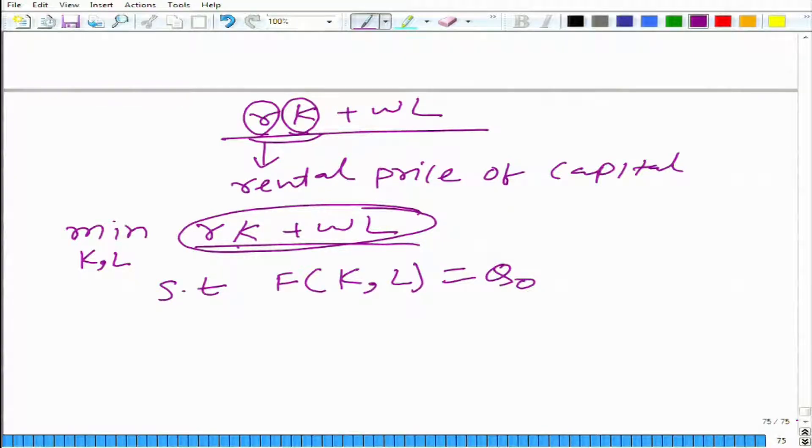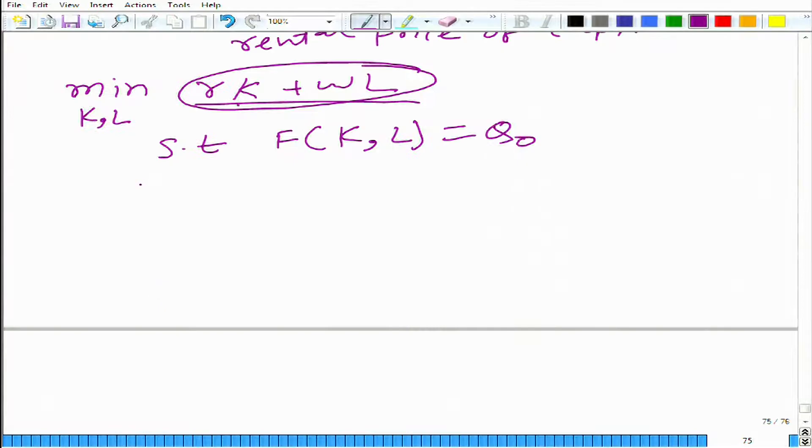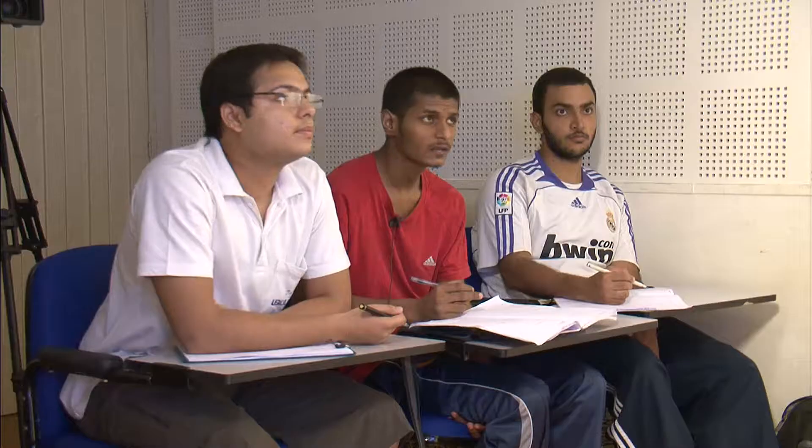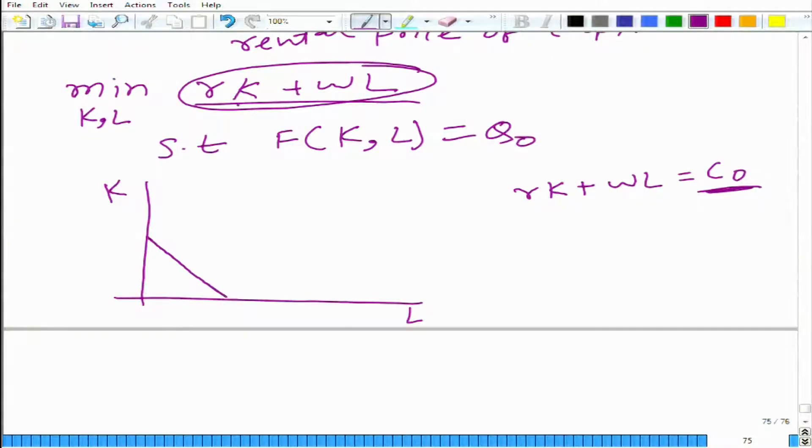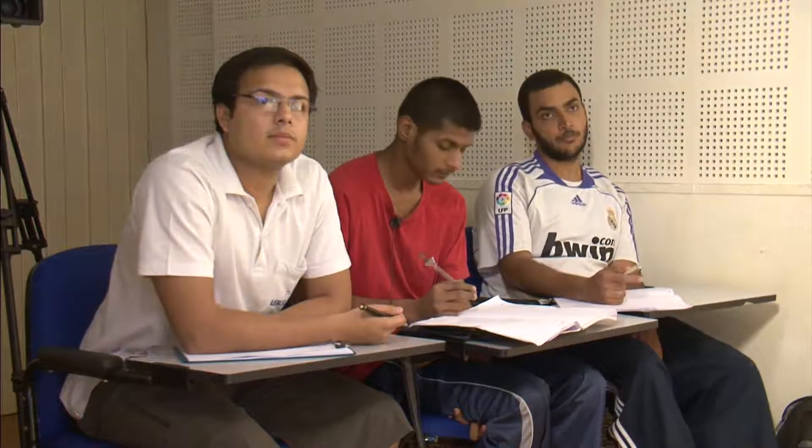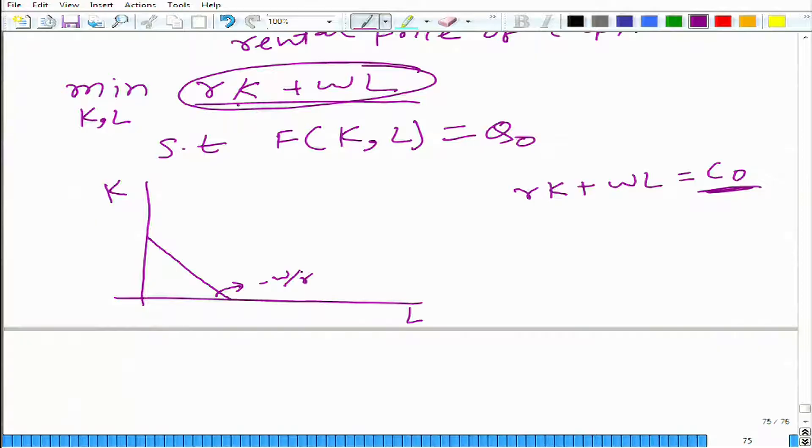How can we do that? Forget maths, we will do it first graphically. Look at it here: what is r*k plus w*l? A straight line. Here what we have is capital, and here what we have is labor. What we can do? We can say it is equal to c₀, we take any c₀ where c₀ is any constant. What would we get? A line. We will get a line, and what is going to be the slope of this? Minus w by r. The slope is going to be minus w by r, and how much is this? c₀ upon r.